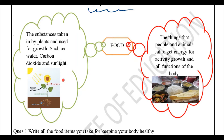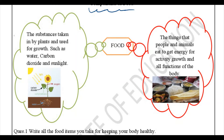Now let's talk about what plants eat. Food for plants refers to substances taken in by plants and used for growth, such as water, carbon dioxide, and sunlight. Plants use these substances to make their food through a process known as photosynthesis.